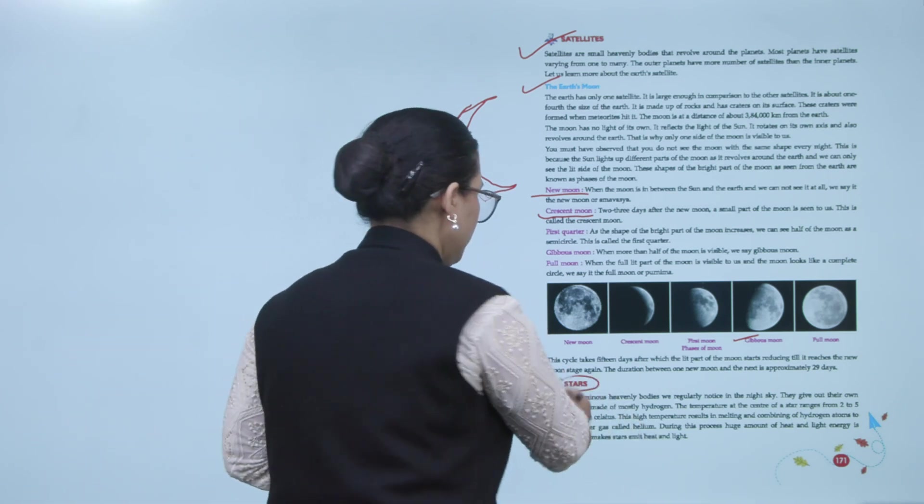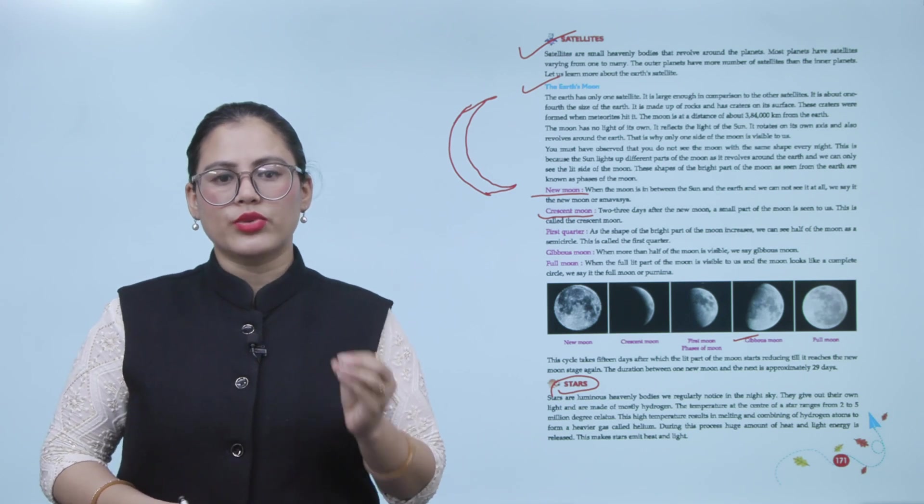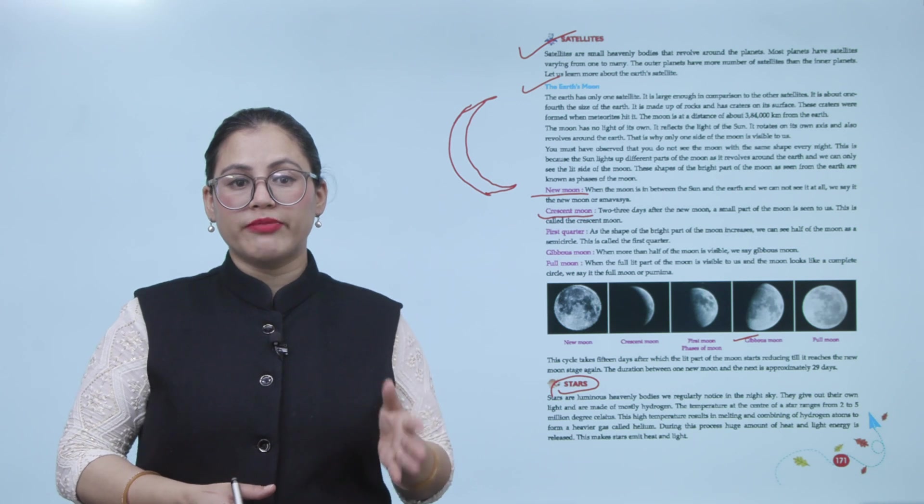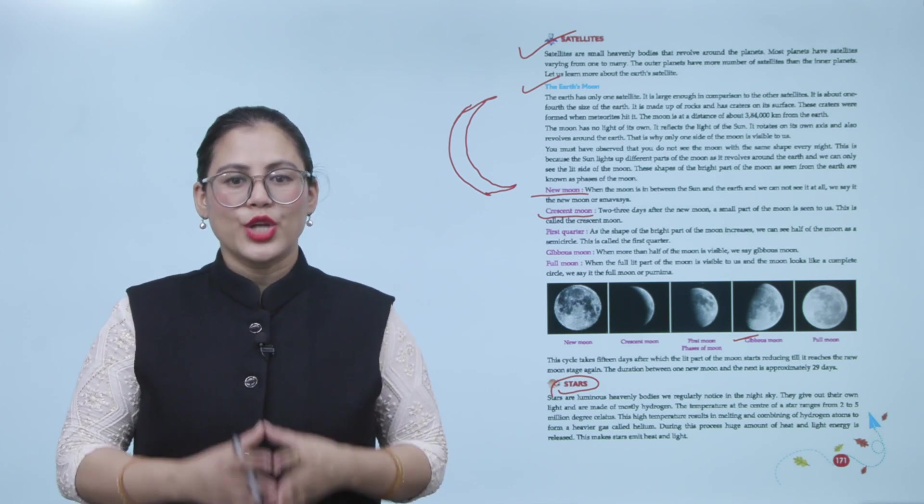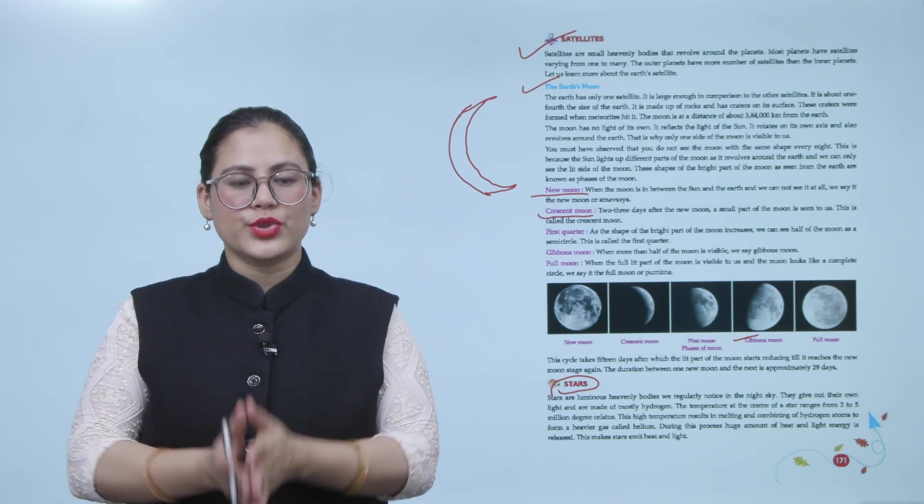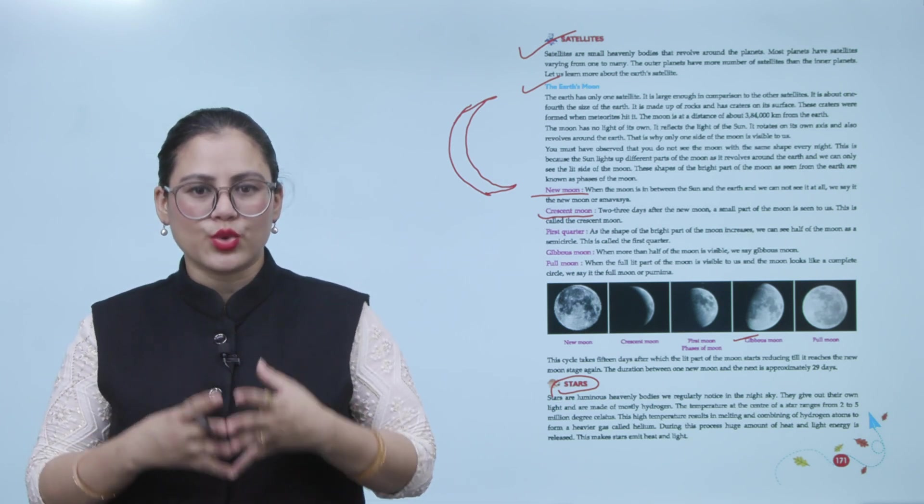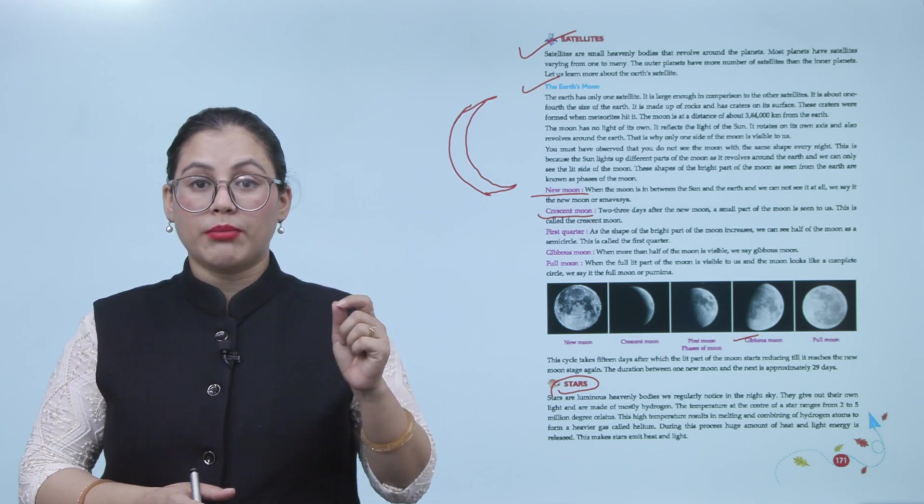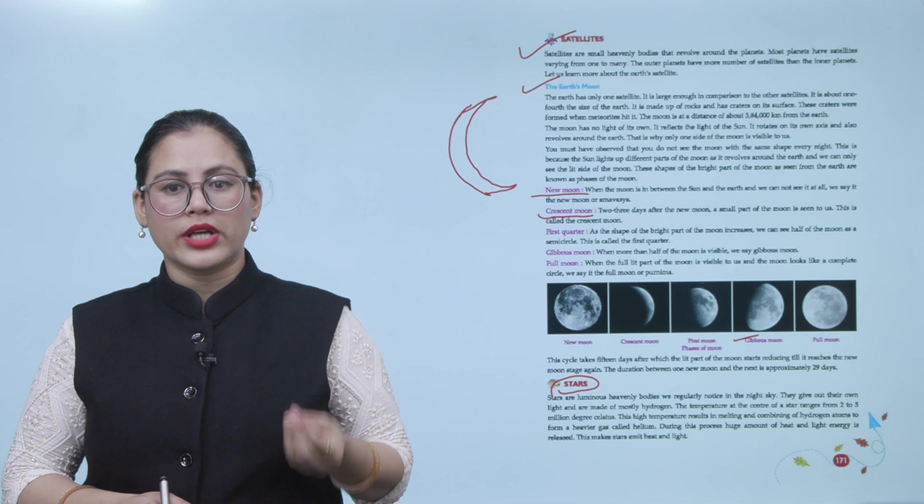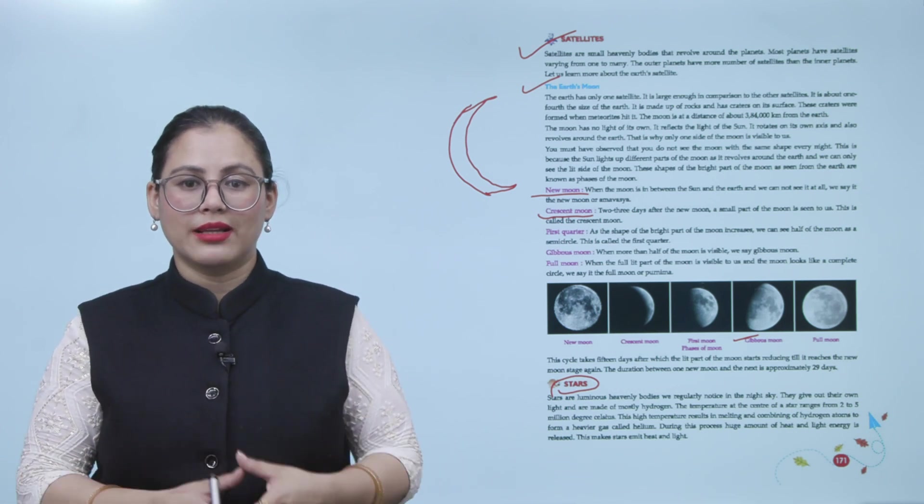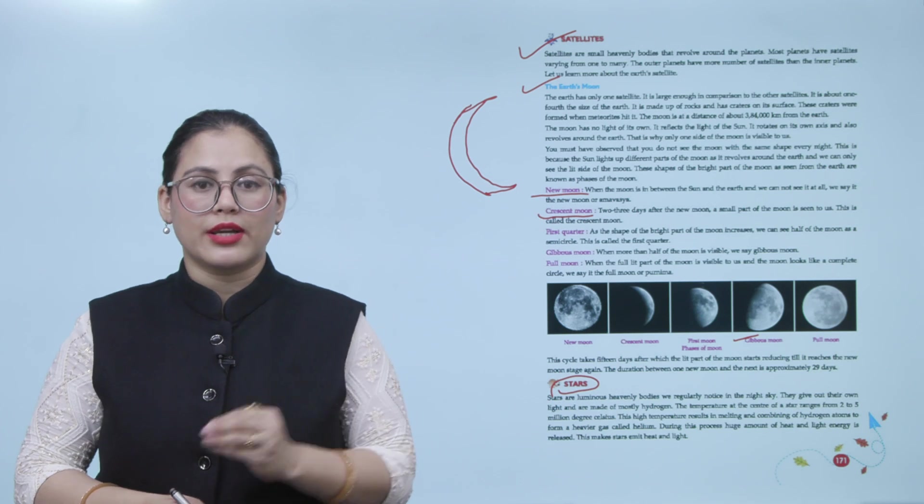Let's talk about stars. Stars are luminous heavenly bodies we regularly notice in the night sky. They give out their own light and are made up of mostly hydrogen. The temperature at the center of a star ranges from 2 to 5 million degrees Celsius. This high temperature results in melting and combining of the hydrogen atoms to form a heavier gas called helium. During this process, a huge amount of heat and light energy is released. This makes stars emit heat and light. Stars are made up of mostly hydrogen, and temperatures at the center are about 2 to 5 million degrees Celsius. Due to this high temperature, there is melting and combining of hydrogen atoms, which becomes a heavier gas known as helium. In this process, a lot of heat and light energy is released, which is why stars emit heat and light.